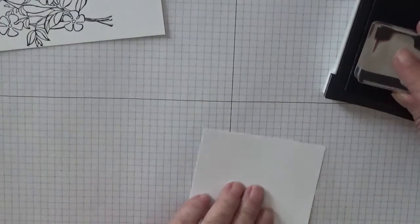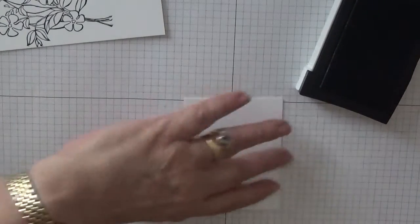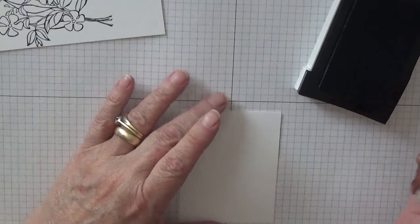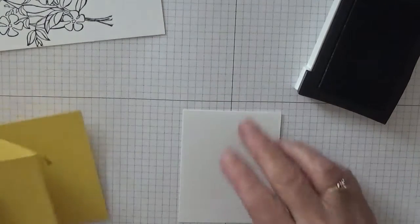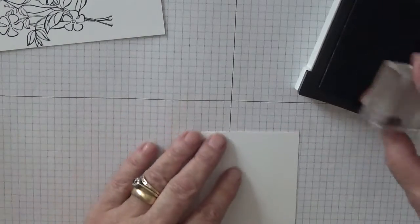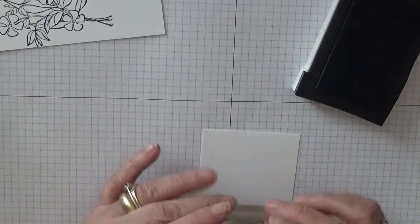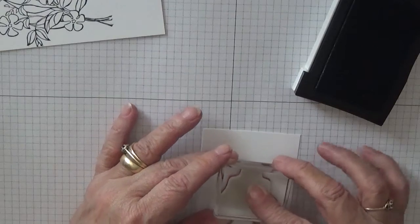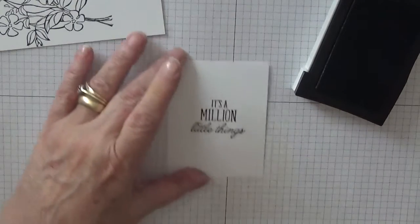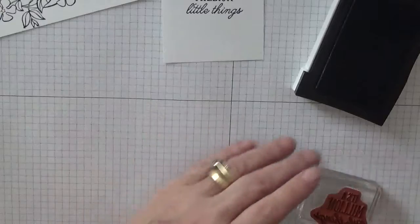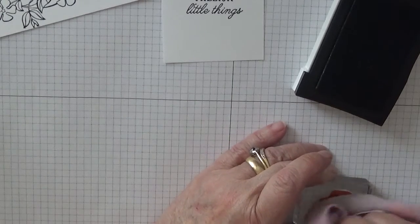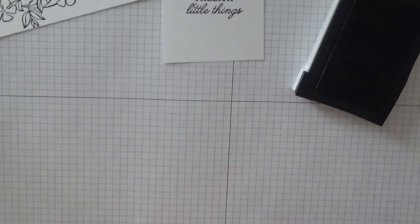And the other sentiment I'm going to stamp inside and it needs to go this way. Nearly, does it go this way? Yes, that thing then. And I'm going to stamp that right in the middle. It's a million little things. Right.